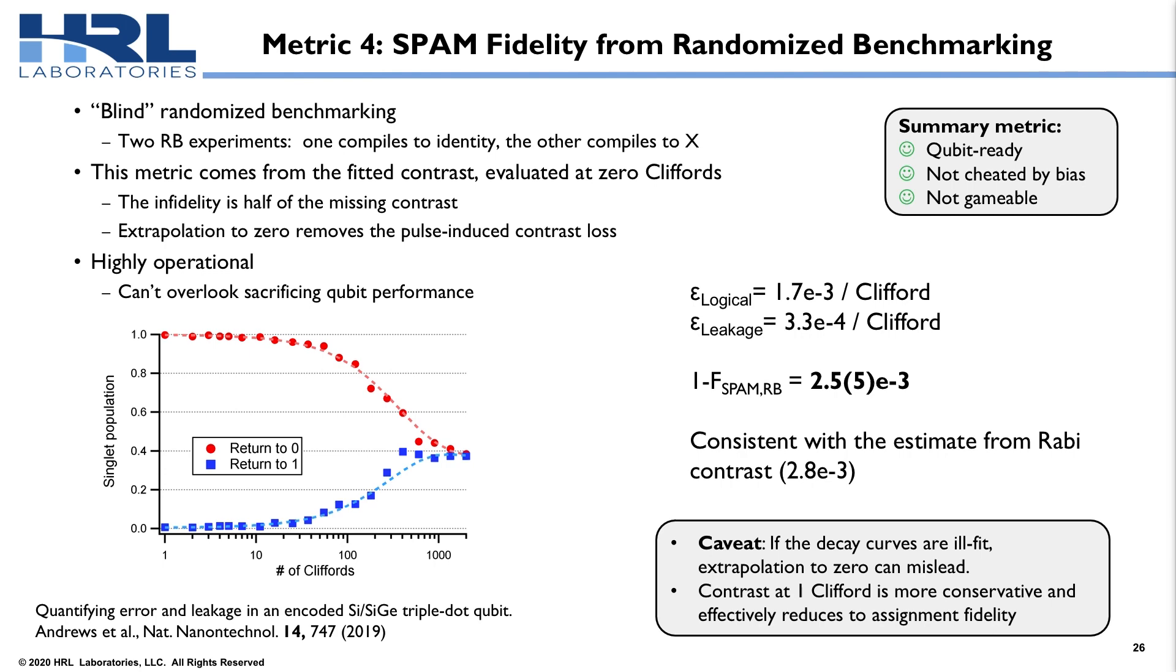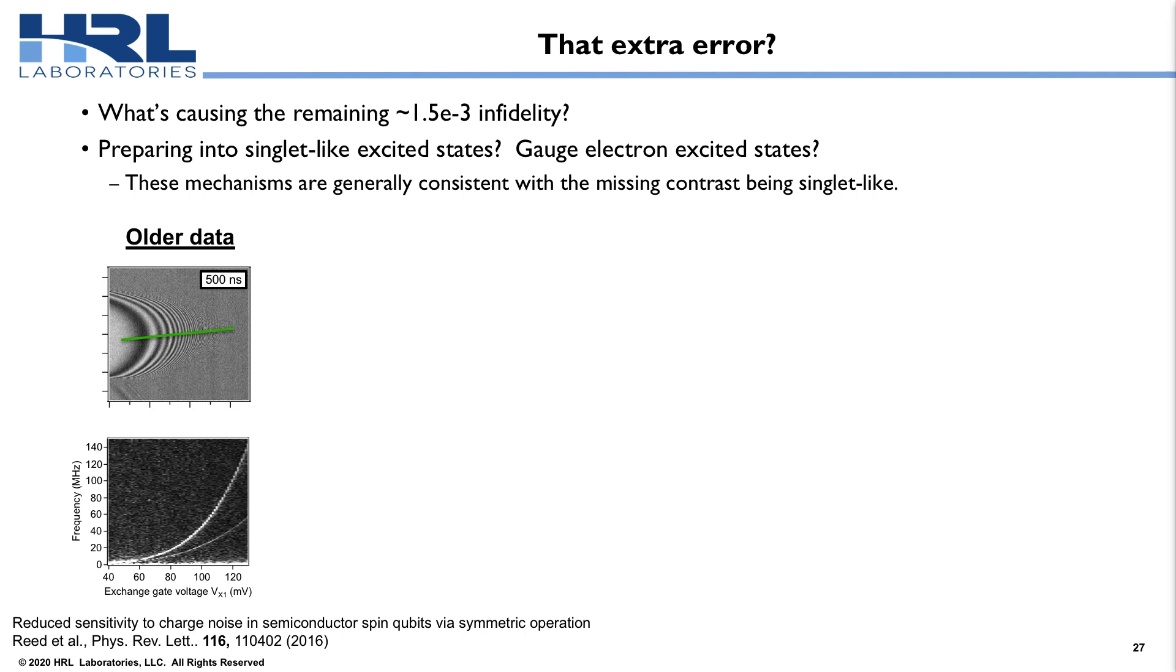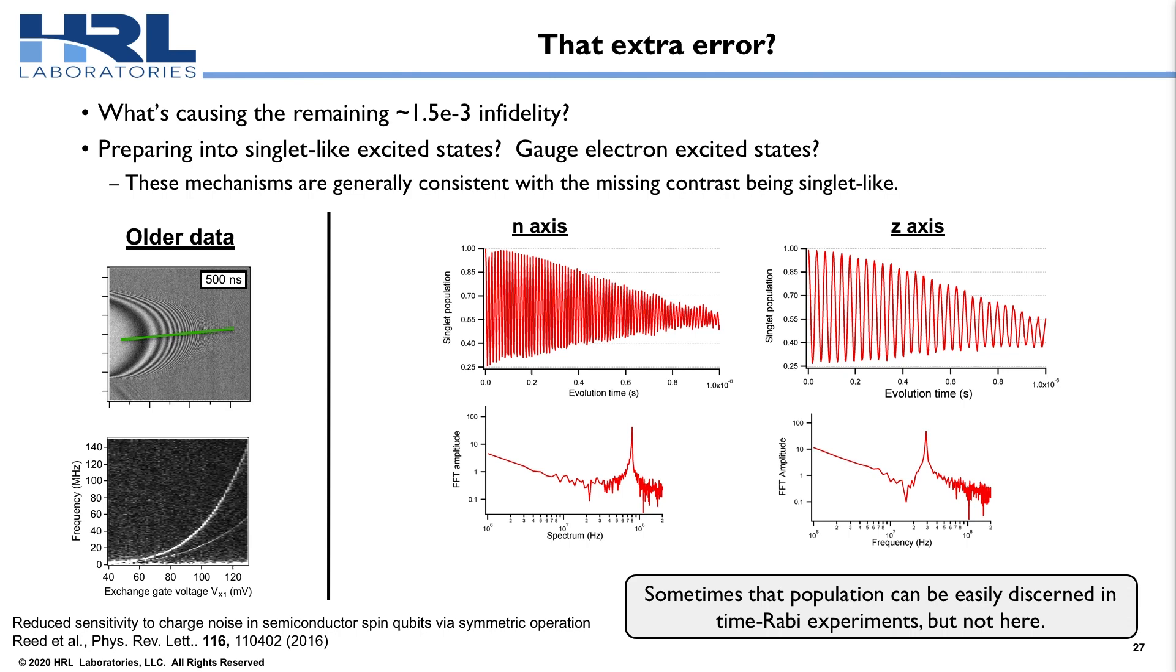So that's very consistent with the fidelity measured from our Rabi contrast, and it doesn't at this point tell us where that extra error is coming from. So our best guess at this extra error is that it's coming from preparing into singlet-like excited states or excited states of the gauge electron. In general, our missing contrast is singlet-like. That's consistent with a lot of these models. If I go to some older data here, I'm showing some Rabi evolution in a device that had a smaller two-electron splitting. When you looked at the time domain of Rabi evolution, you saw very clearly that there were two different frequencies going on. There's two populations that you're averaging over, which could lead to this sort of an effect. So in the current qubit, I can look at time Rabi oscillations and look at their Fourier transforms. But unfortunately, I don't see any second peaks. Now, that might be because they're not there, but it could also be because I'm looking for a population at this 1.5E-3 level, and this just isn't sensitive enough. So it's certainly an open problem, exactly what's going on here and how best to measure it.